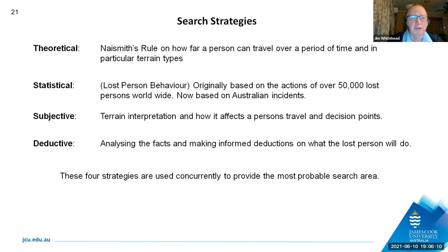The subjective strategy involves looking at the lay of the land. If you're in a mountainous area, you're limited in how far you can walk and the terrain drives you in particular directions — so this is very dependent on how well our SAR coordinators can read a map. Deductive is basically the Sherlock Holmes of it all: looking at the facts and trying to determine what a missing or lost person would do to assist themselves. We use all four strategies one on top of the other, and normally what comes out is an area of highest probability that can withstand scrutiny if needed.